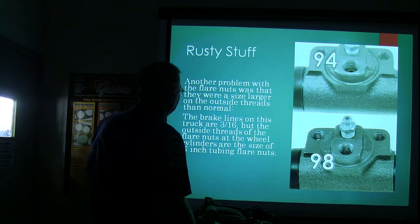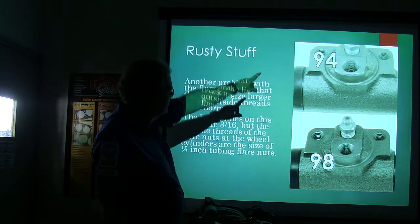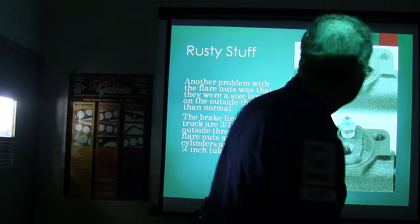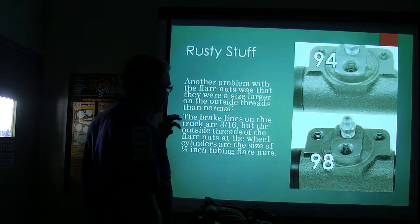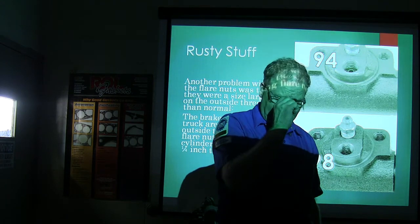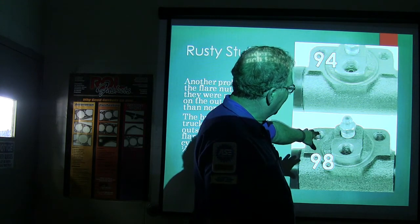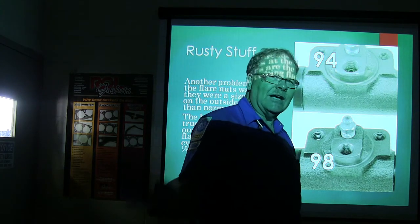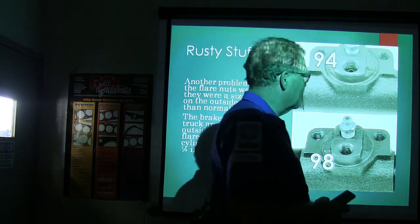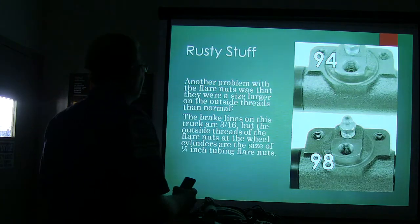Another problem: the flare nuts were a size larger on the outside threads than normal — the outside threads were the same size as a quarter-inch brake line, but these were 3/16ths line. If you put the new wheel cylinder on, the brake line nuts just wouldn't work. I got wheel cylinders for a '98 Ranger which were just right, so I was able to use standard brake lines. That's outside-the-box thinking — problem solving and critical thinking. How can we fix this safely so it works like it's supposed to? There was nothing wrong with that repair.